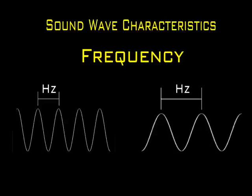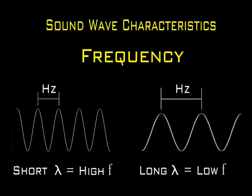The number of complete cycles per unit of time is called frequency. The unit used to measure wave frequency is called Hertz. The frequency of the wave depends on the frequency at which the source is vibrating. Certain sounds are described as high and others as low. A description of a sound as high or low is known as the pitch of the sound. Pitch is how we perceive the sound. Sound waves that have high frequency are heard as sounds of high pitch, and vice versa.